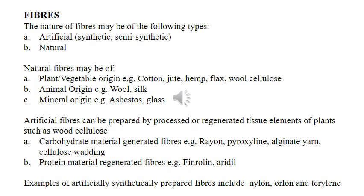Fibers may be of the following types: natural fibers or artificial fibers. Natural fibers may be of plant or vegetable origin, with examples including cotton, hemp, and wool cellulose. For animal origin, examples include wool from the sheep and silk from the silkworm. Natural fibers of mineral origin include examples such as asbestos and glass.